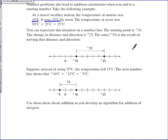The temperature at noon was 10 degrees Celsius plus 25 degrees Celsius to equal 35 degrees Celsius. You can represent this situation on a number line. The starting point is positive 10 degrees. The change in distance and direction is positive 25, so we will go to the right 25 on the number line. The sum, positive 35, is the result of moving that distance and direction.